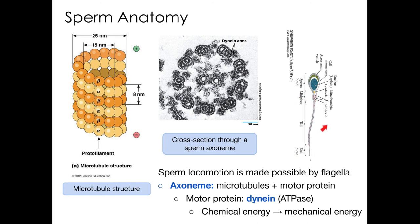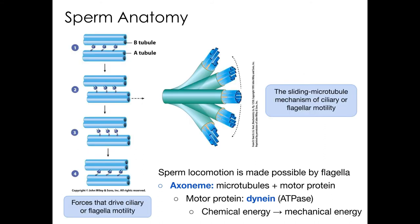The flagellum acts as the propulsion system for the sperm and is composed of an axoneme — a structure consisting of nine doublets of microtubules with two microtubules in the center. The axoneme also contains motor proteins known as ciliary dyneins, which protrude from one microtubule doublet to the adjacent one. The bending of the flagellum results because the ciliary dyneins cause the microtubule doublets to slide past each other, and because the doublets are linked together, that sliding is converted into bending.